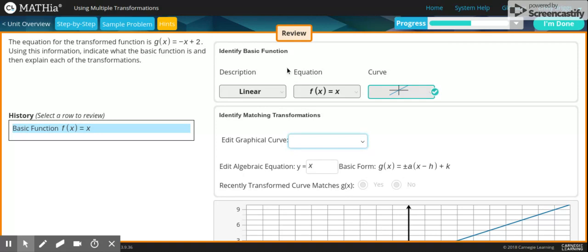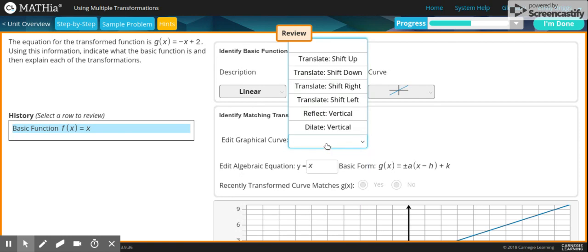So to edit the graphical curve, it says -x + 2. The first step I would say would be to reflect because you're changing the positive x to the negative when you reflect.